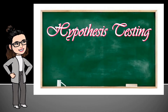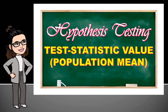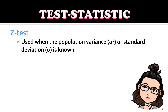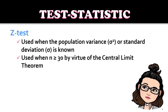The topic for today is still under hypothesis testing — we have the test statistic value of the population mean. As discussed previously, we have the Z-test, which is used when the population variance or the standard deviation is known. It is also used when our sample size is greater than or equal to 30 by virtue of the central limit theorem.